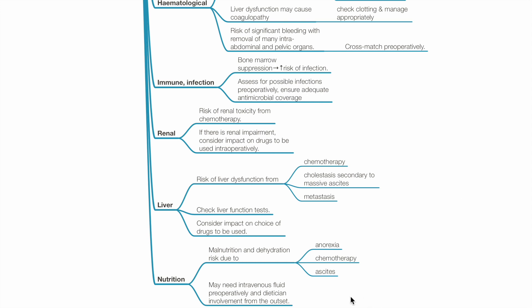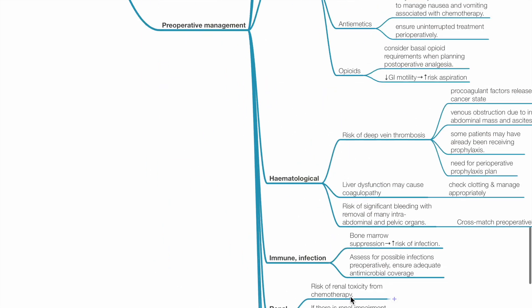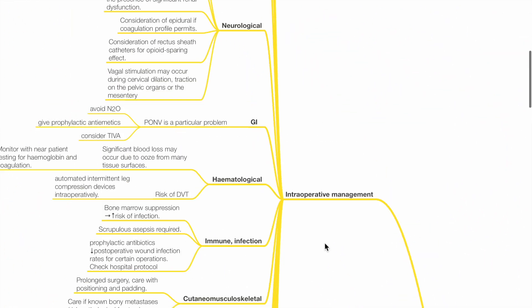Nutrition. Malnutrition and dehydration risk is due to anorexia, chemotherapy and ascites. There may be need for intravenous fluid replacement pre-operatively and dietician involvement from the outset. Next is intraoperative management.